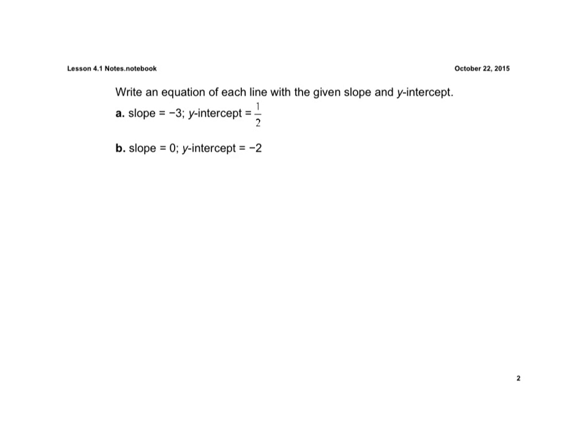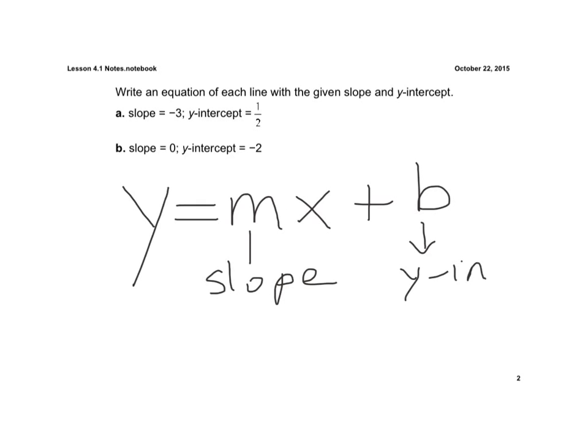First thing we want to do is write an equation of each line with the given slope and y-intercept. Now remember, slope-intercept form is y equals mx plus b, where m is our slope, and the b is our y-intercept.